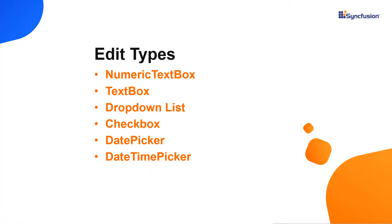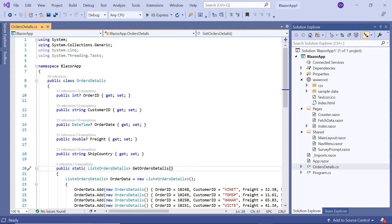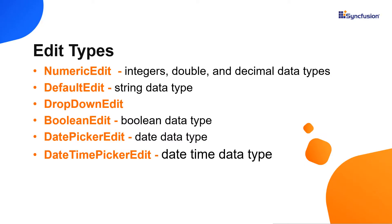Next, I will show you the different cell edit types available in the DataGrid component: NumericTextBox, TextBox, DropDownList, CheckBox, DatePicker, and DateTimePicker. By default, Blazor DataGrid supports setting the edit type based on the column data type. TextBox is the default type for string values, NumericTextBox for integer, double, and decimal data types, DatePicker for date data type, DateTimePicker for datetime data type, and CheckBox for boolean values.